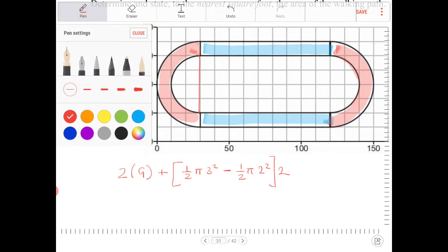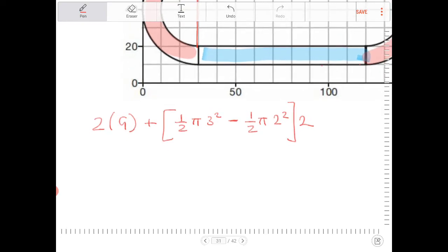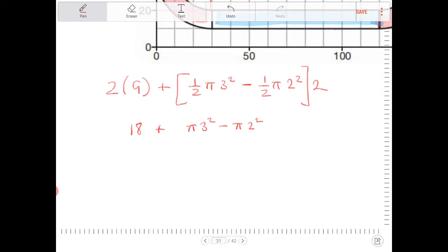If you look at this, if I distribute the two through, I'll end up with π times 3 squared minus π times 2 squared. So then going through the order of operations, 3 squared is 9, 2 squared is 4, 9 minus 4 is 5. I get 5π as a result of that.